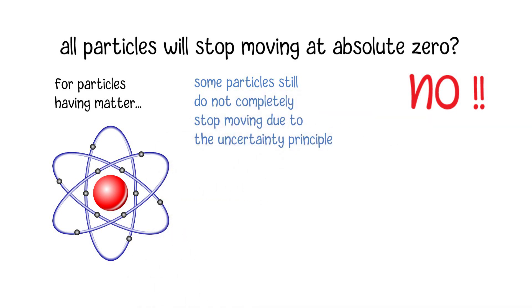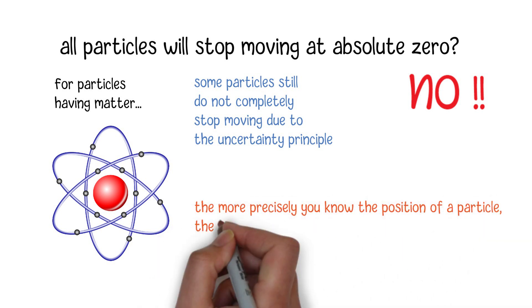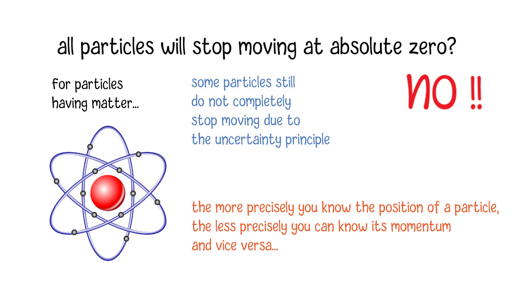In simpler terms, the uncertainty principle implies that the more precisely you know the position of a particle, the less precisely you can know its momentum, and vice versa. The uncertainty principle states that there is a fundamental limit to how precisely we can know both the position and momentum of a particle simultaneously.